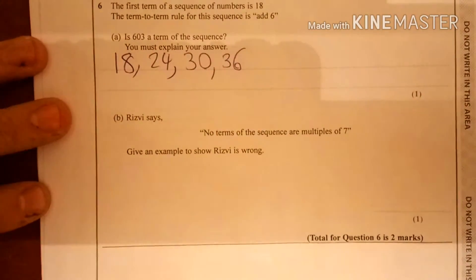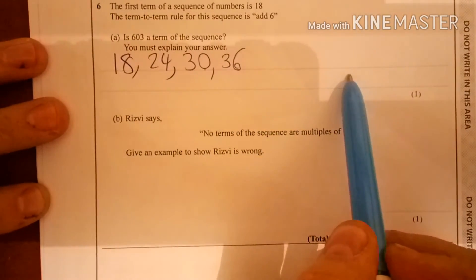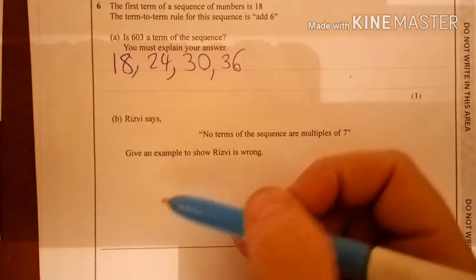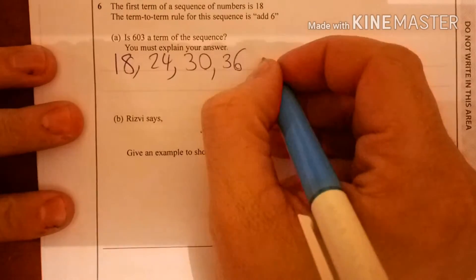I've just drawn a couple I can work with. Now, I could keep going until I hit 603, or if I don't hit 603, or we can do something smart. We can work out the nth term.